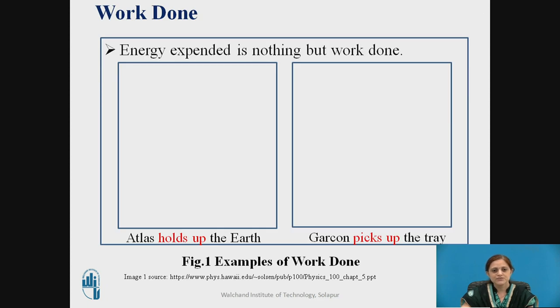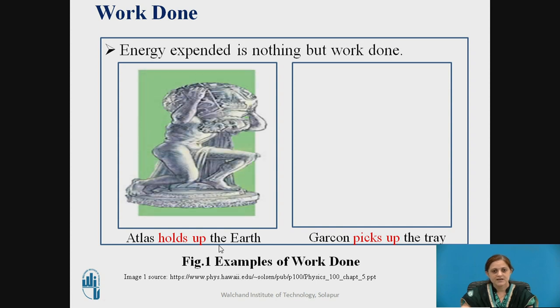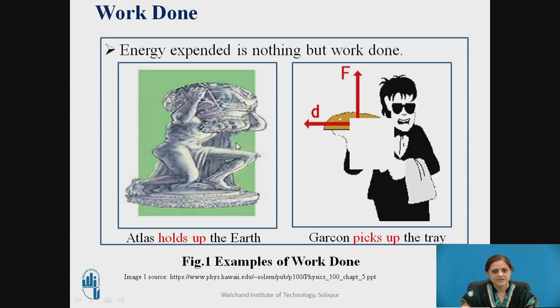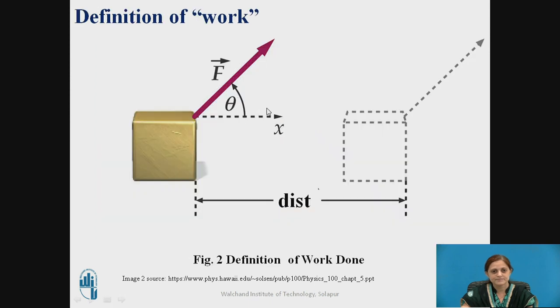Now the work done, some of the examples of work done are given. Actually the work done is energy expended. So in first figure, atlas holds up the earth. And in second figure, Garkon picks up the tray. So these are the examples of work done. So some force is to be applied to do the work.